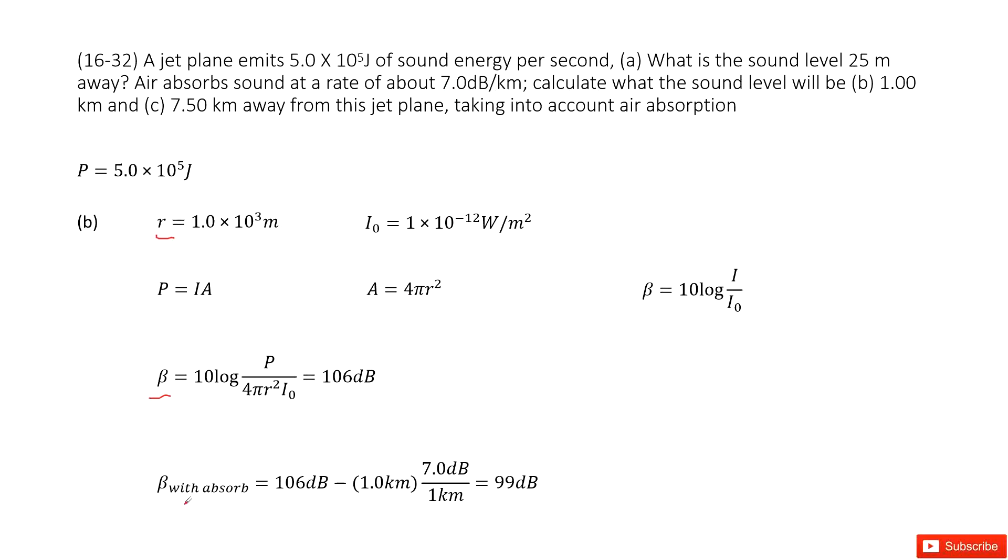We use beta with absorption, which is the beta without absorption minus the absorption rate: 7 dB per kilometer times 1 km. Get the answer there.